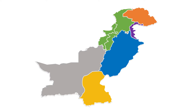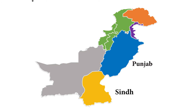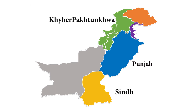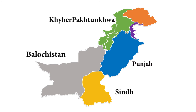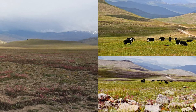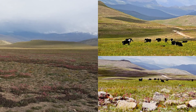Pakistan has four provinces. They are Punjab, Sindh, Khyber Pakhtunkhwa, and Balochistan.